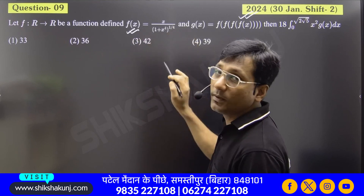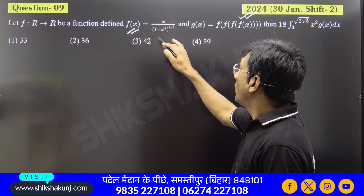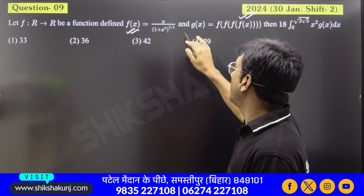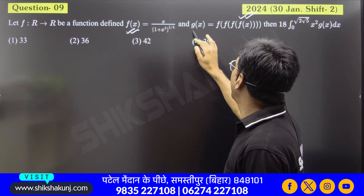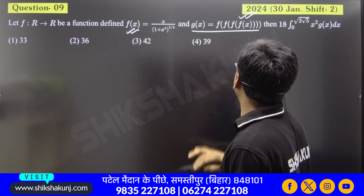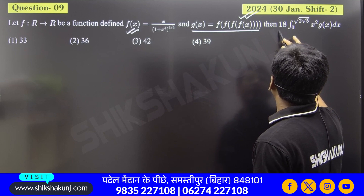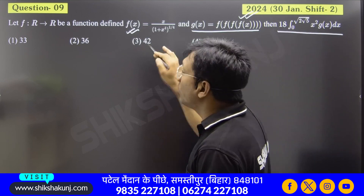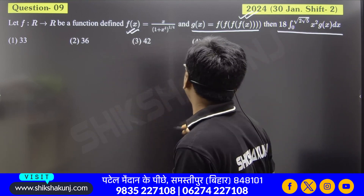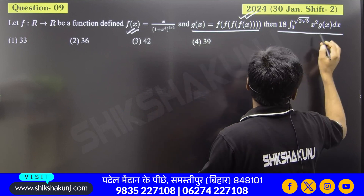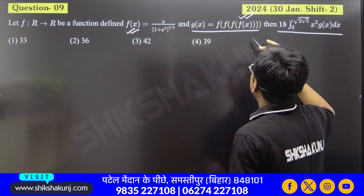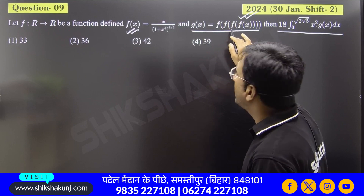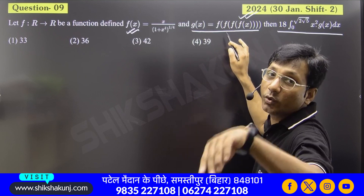You said that if f(x) is equal to x divided by (1 + x⁴) to the power 1/4, and g(x) is given here. So you understand that g(x) is this composite function f of x.